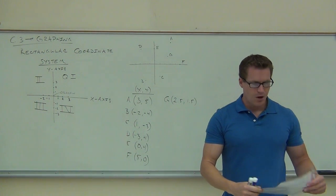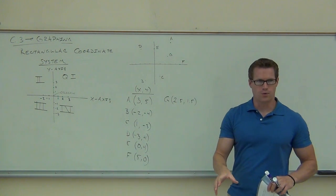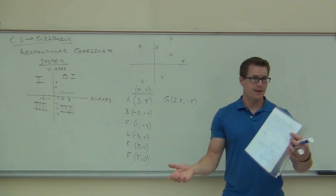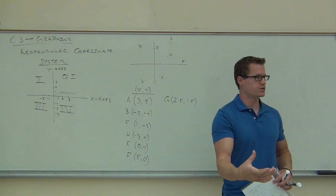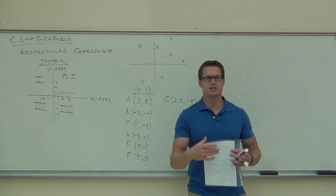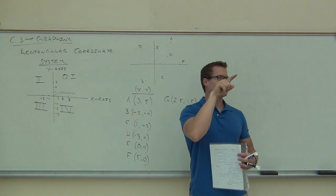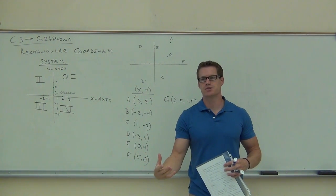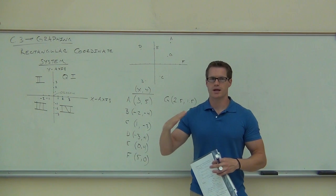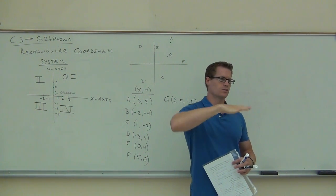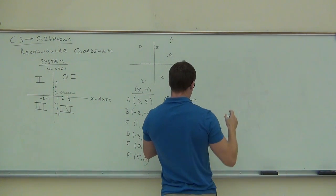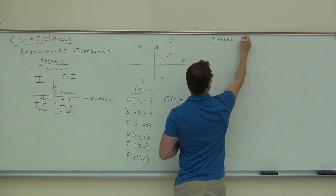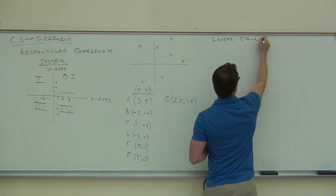Let's talk about something called linear equations. What does the 'linear' part mean? Line — that's the key word. Linear means line, so these are equations that make lines. In math, a line means a straight line. When we're talking about linear equations, we're talking about equations that on a graph will create a straight line — horizontal, angled, or even vertical in some cases.